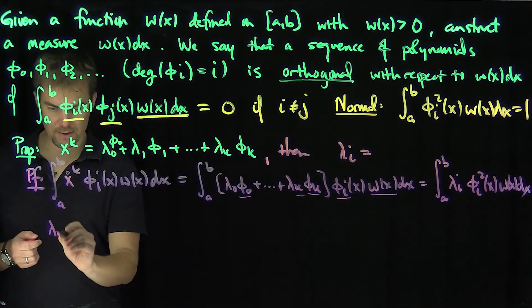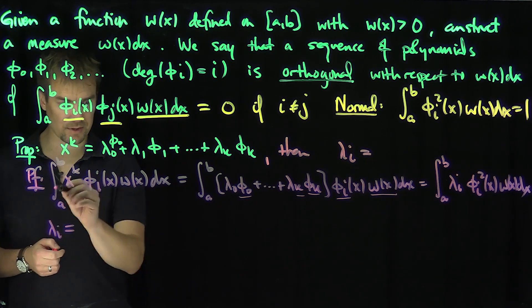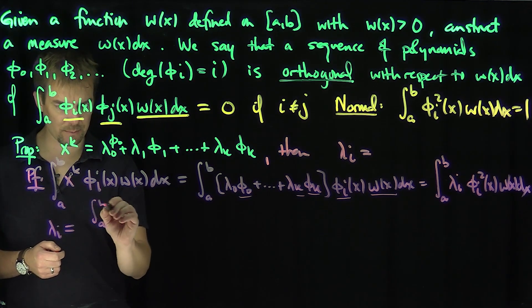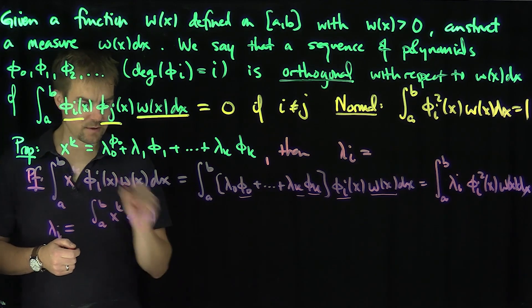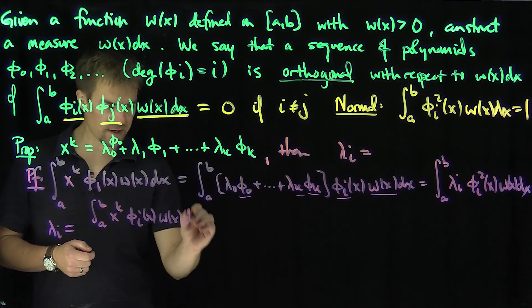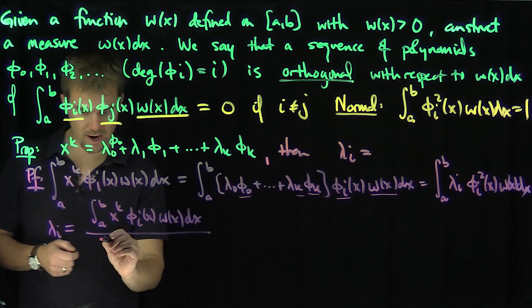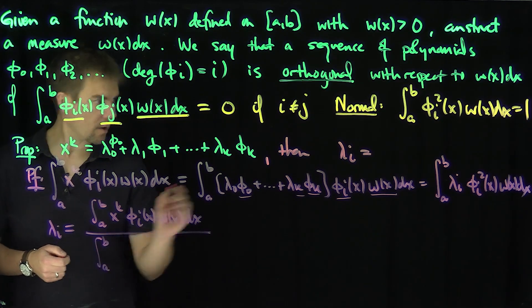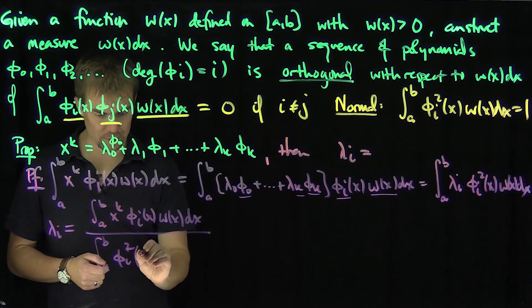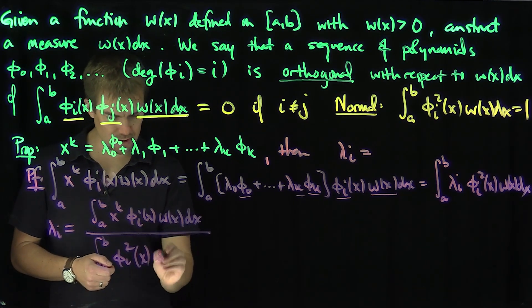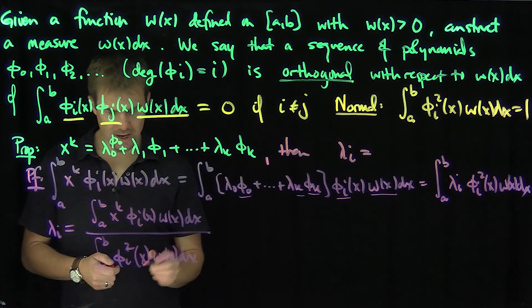Therefore, λᵢ is going to be the integral from a to b of x^k φᵢ(x)w(x)dx over this normalization. And if we assume this is an orthonormal set, then this denominator is just going to be equal to one, which makes things a lot easier.